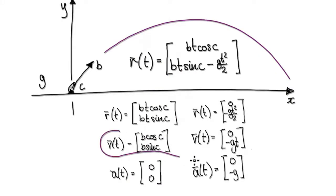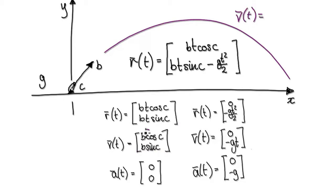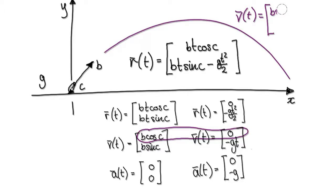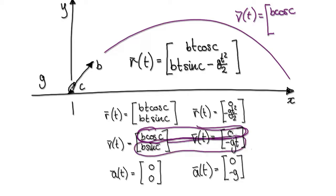Looking at the velocity vector, we need to combine the two components. The velocity vector is given by: the x component is b·cos(c), and the y component is b·sin(c) minus g·t.